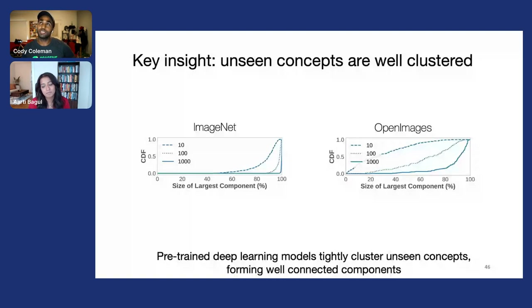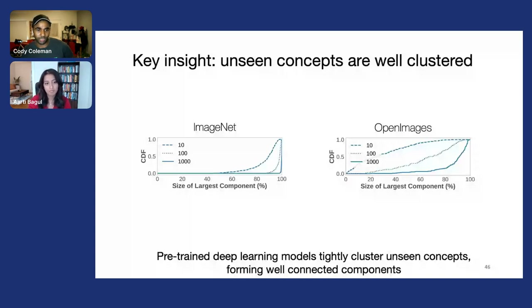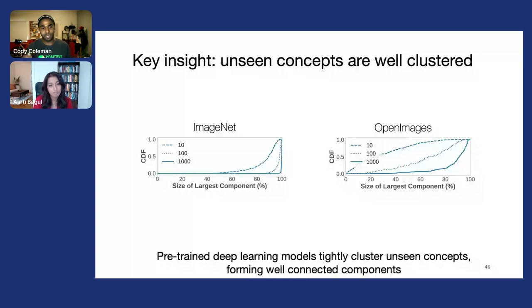We're not exactly using K-means. We're using more of an approximate K-nearest neighbors algorithm just to get a very quick lookup for a single data point to find its nearest neighbors. We actually don't want to cluster everything if we don't have to.